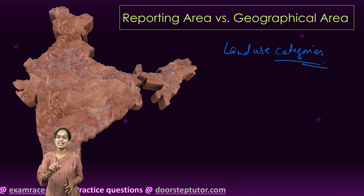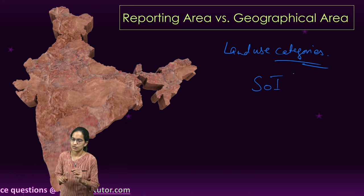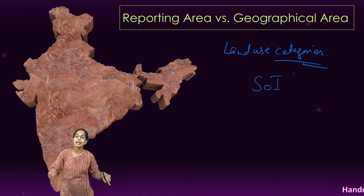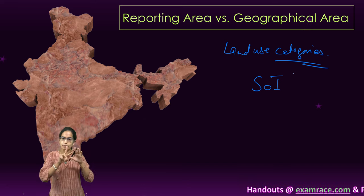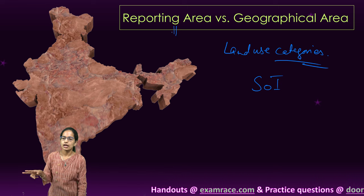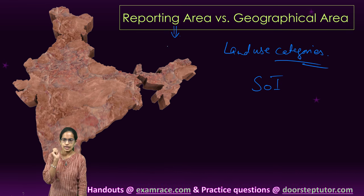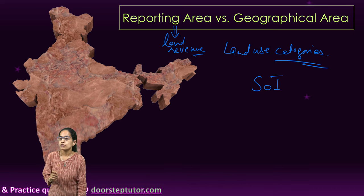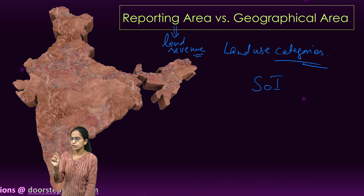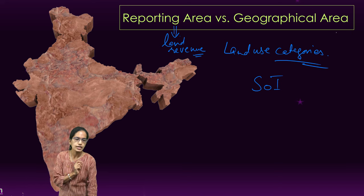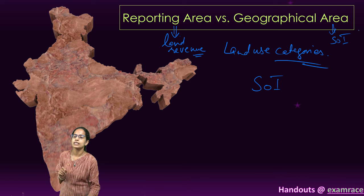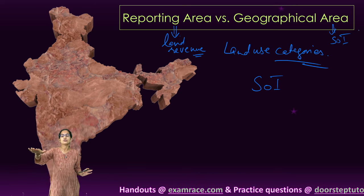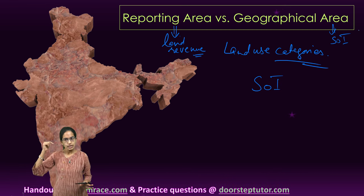Geographical area, however, is the area which is delineated by the Survey of India — it defines the land boundaries and administrative units of India. The basic difference: reporting area is based on estimates from land revenue records, while geographical area is measurement results published by the Survey of India.